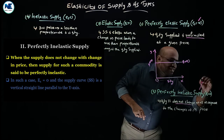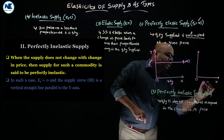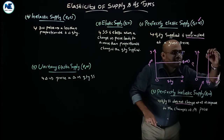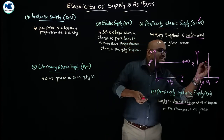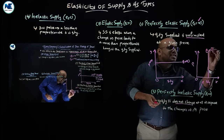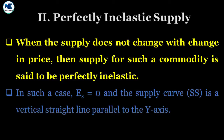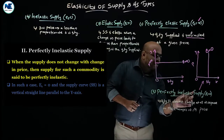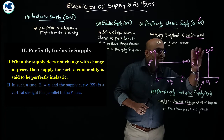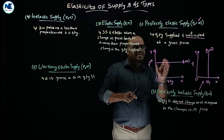For perfectly inelastic supply, the curve is vertical in shape, parallel to the OY axis or price axis. Elasticity of supply is zero, and the coefficient is zero. To summarize: the perfectly inelastic supply curve is vertical and parallel to the price axis, while the perfectly elastic supply curve is a horizontal straight line.